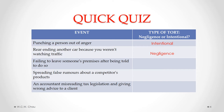The third event is failing to leave someone's premises after being told to do so. That is an intentional tort — you intentionally failed to leave the premises — and that is specifically considered to be the tort of trespass. The next event is spreading false rumors about a competitor's product. Again, that's an intentional act and an intentional tort, which is called injurious falsehood.